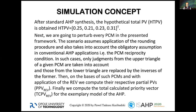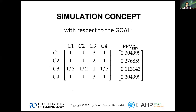I also did the same for the so-called perturbed pairwise comparison matrices. I perturbed them by applying the reciprocal condition — that each matrix should be reciprocal — and I rounded the elements of the matrices to the closest value of the Saaty scale. On that basis, with the application of the right eigenvector method, I calculated partial priority vectors.